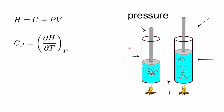Most of the work we do is not at constant volume but at constant pressure — atmospheric pressure — and that influences the thermodynamic parameters. We define another energy known as enthalpy, which is the sum of the internal energy and pressure times volume. The heat capacity at constant pressure is the change in enthalpy as a function of temperature, and that is the quantity we measure most often because we are working in the real world as opposed to at constant volume.